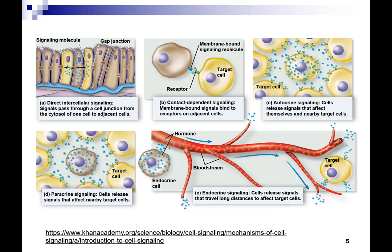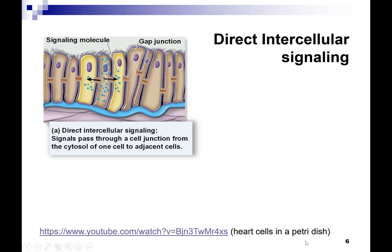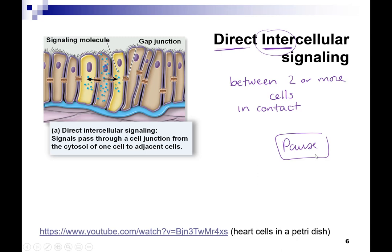We're first going to talk about the big picture of cell-to-cell communication. The Khan Academy has multiple pages that describe cell communication along with some videos, which are a good resource if you'd like to learn more. The first type of cell communication we're going to talk about is direct intercellular signaling — signals directly between two or more cells that are in contact.